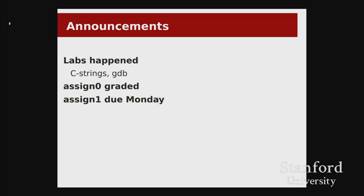A couple of announcements before we get into lecture today. The first couple are things that have already happened. Labs hopefully all happened this week — hopefully you all enjoyed that process of working through C strings, a little bit of GDB, just seeing generally how to work with C and work with pointers. The other thing I want to mention briefly is that assignment zero grades went out a couple of nights ago, so we made a post about that with the medians. If you want to review your grades at any point throughout the quarter, you can go to the gradebook link on the course website. That'll show you your assignment scores, but also your lab attendance. Note that the lab attendance will not show up until the end of the week — we'll probably post it around Saturday.